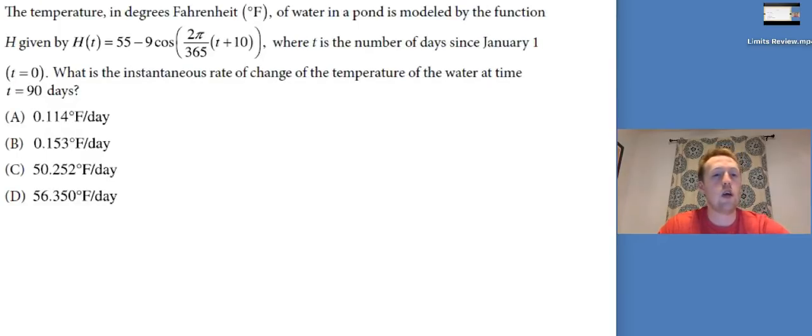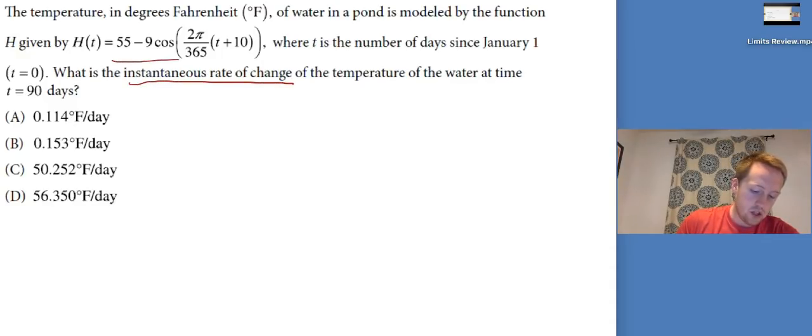Let's look at our first question. We've got the temperature in degrees Fahrenheit of water in a pond is modeled by the function h of t given by all that stuff, where t is the number of days since January 1st, which is t equals 0. What is the instantaneous rate of change of the temperature of the water at the time t equals 90 days? Okay, instantaneous rate of change. This function is horrible. You're on the calculator section on this question. Another big tip, they've got three places after the decimal, which is standard rounding in calculus.